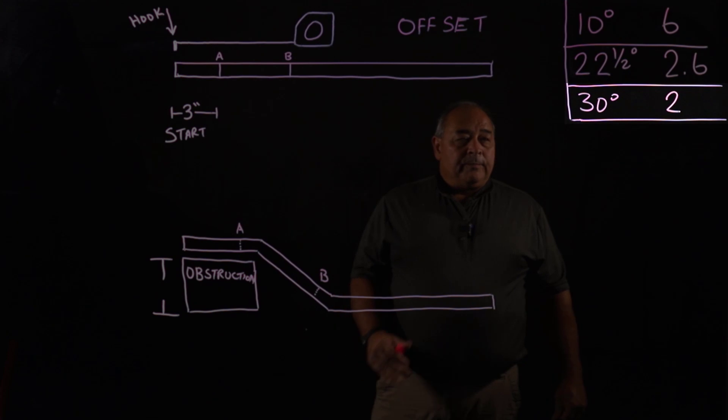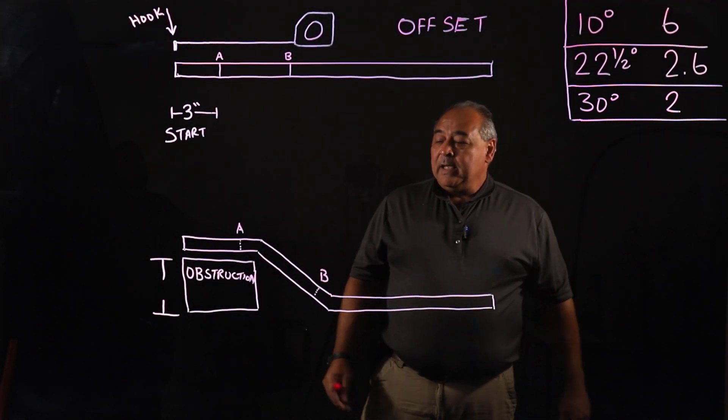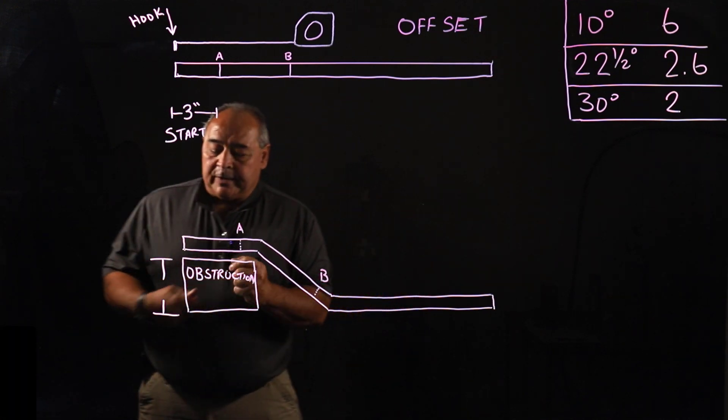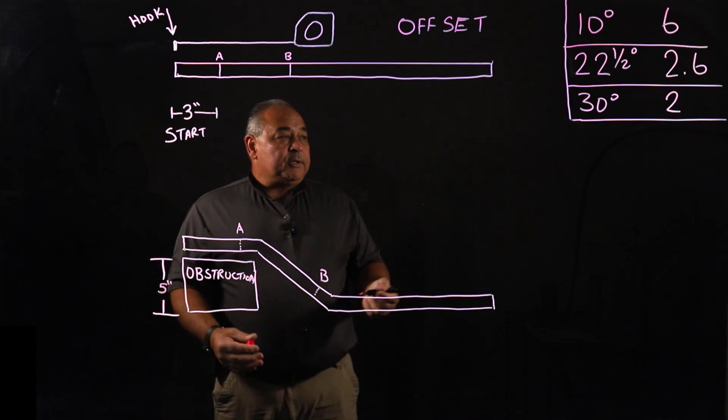But a 30 degree is so simple and it's so easy for us to remember. Your multiplier is 2. If this is five inches, and I'll go ahead and write the five inches over here, our multiplier is going to be 2.